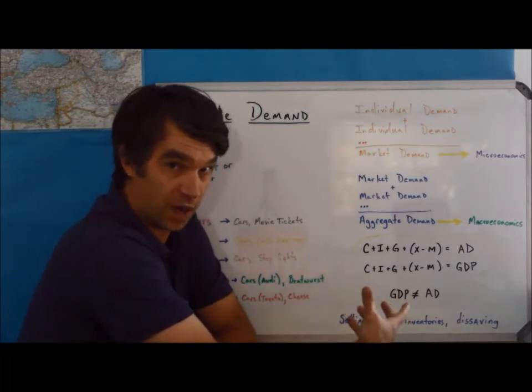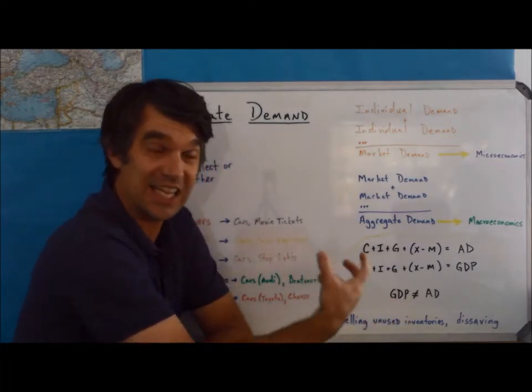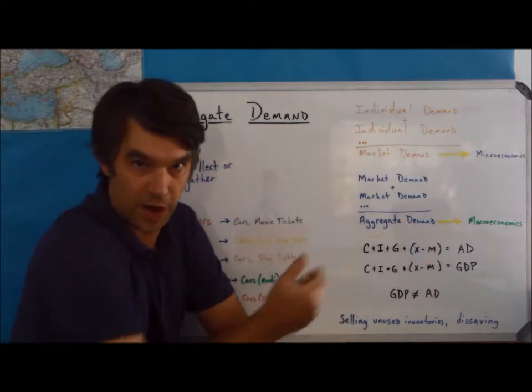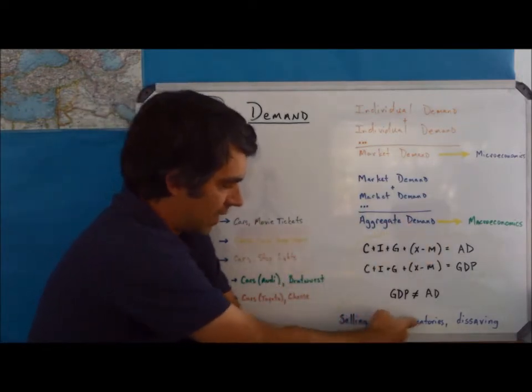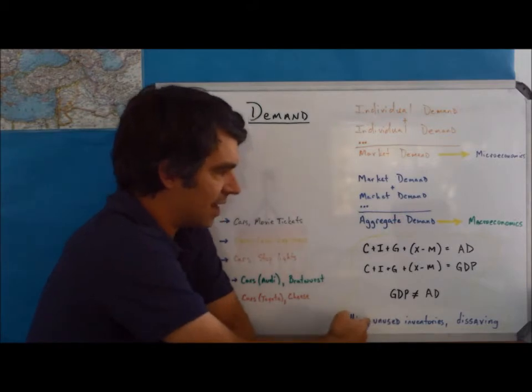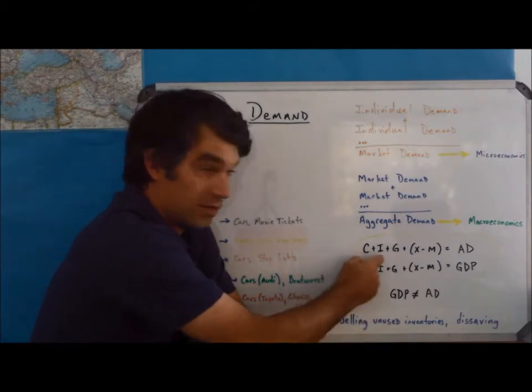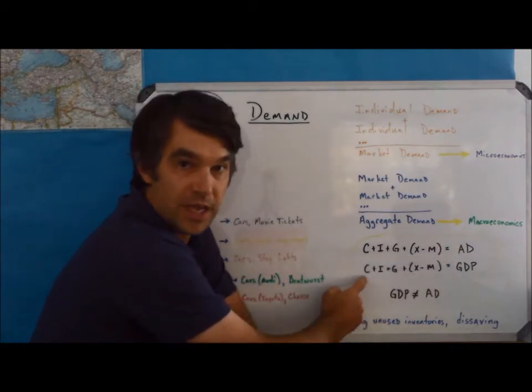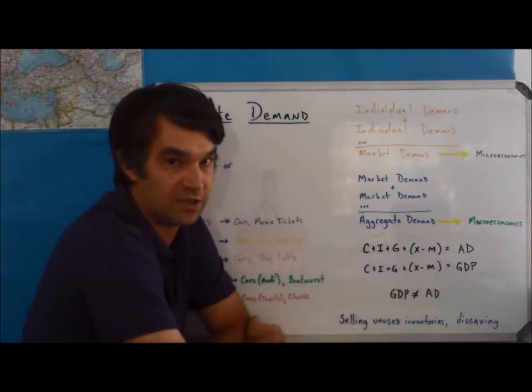Or maybe even components of a car. Maybe they could sell engines they made last year inside of brand new cars. So I could sell unused inventories and that would be part of consumption or investment or government spending here for aggregate demand. But it wouldn't be part of GDP because it was produced in a previous year.